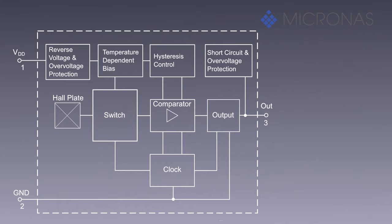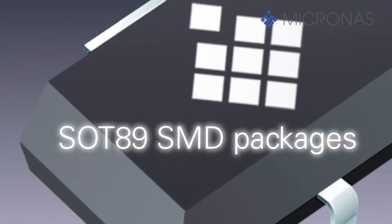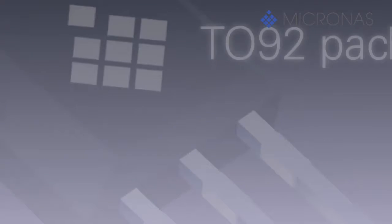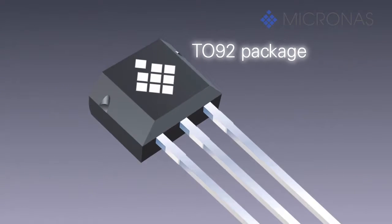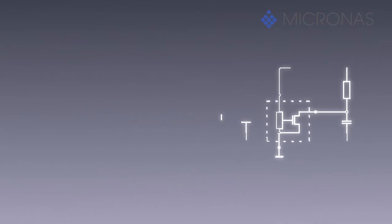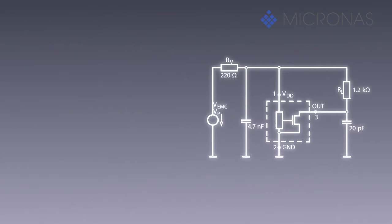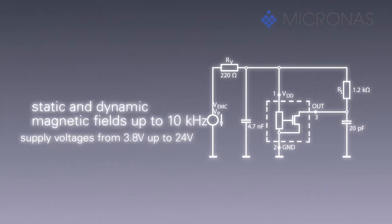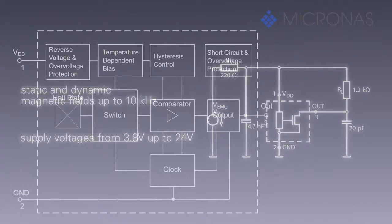The bipolar switches are produced in CMOS technology and are available in an SMD version as well as in a leaded TO92 package. The sensors operate with supply voltages from 3.8 volts to 24 volts with static and dynamic magnetic fields up to 10 kilohertz.